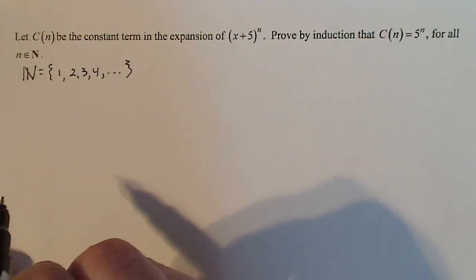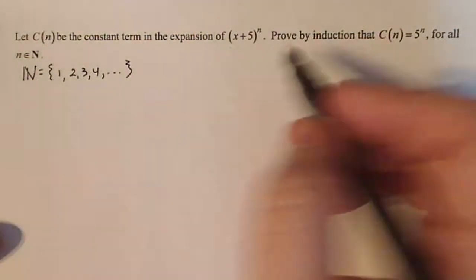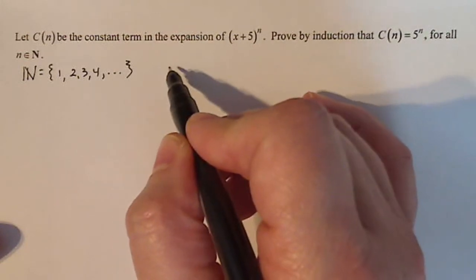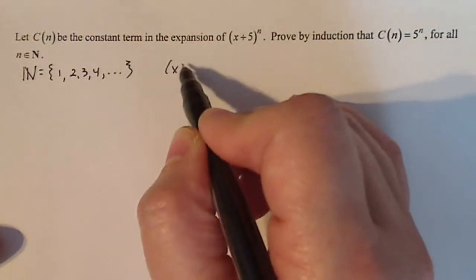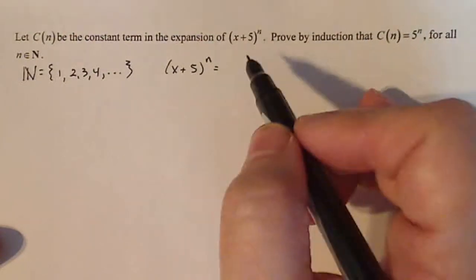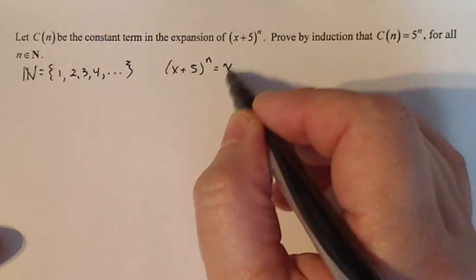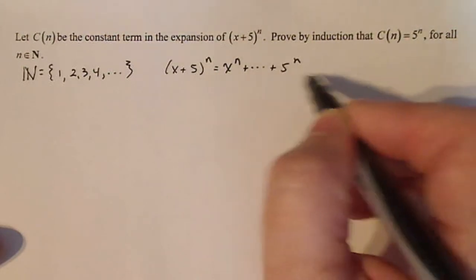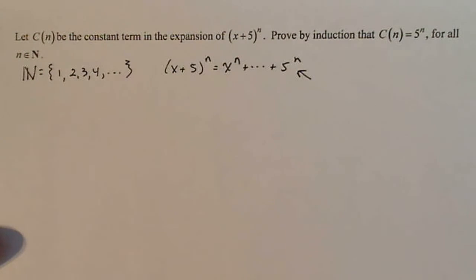So if I'm going to expand something like this, I'm not going to actually expand this to the n, that doesn't make any sense, but I do know that the first term is going to be x^n and the last term is going to be 5^n, and that's always the constant term. That's something that you have to know about mathematics in order to be able to do this problem.